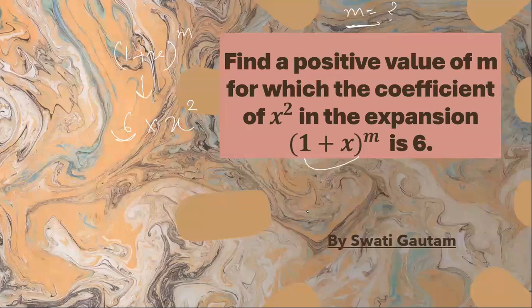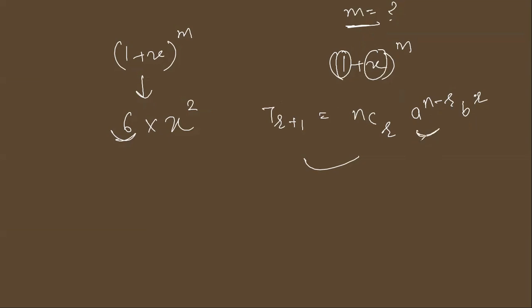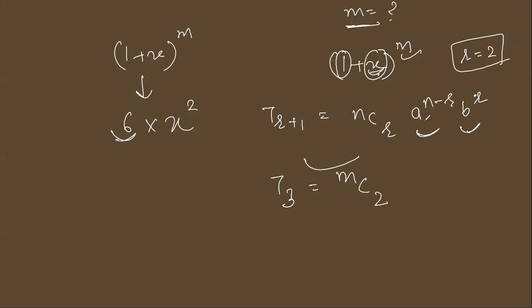Moving to the next page — the complete question is (1+x)^m. Using the general term formula T(r+1) = nCr · a^(n-r) · b^r, here a is 1 and b is x. Since 1 raised to any power is 1, we focus on b = x. To get x², we take r = 2, giving us T3 = mC2 · x².